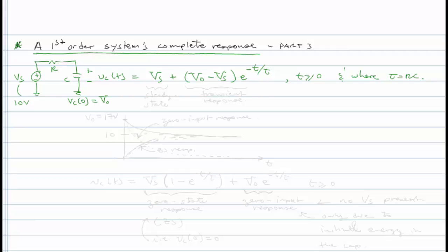Now, we can identify the two components of this response. This is the steady state, steady state or particular or forced. This term here is the transient response.